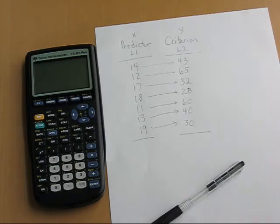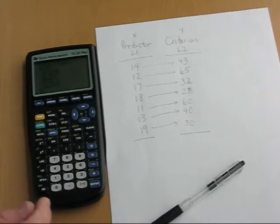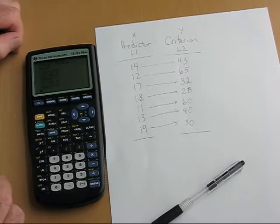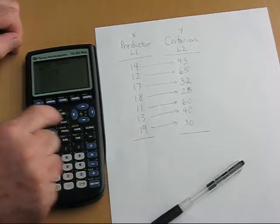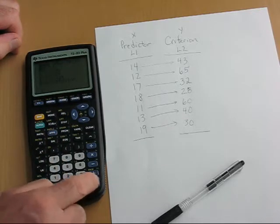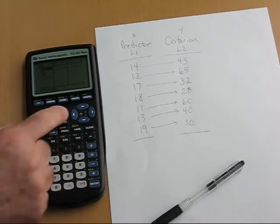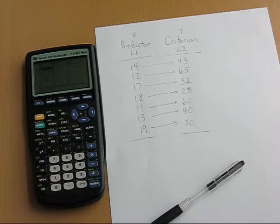Let's turn on the calculator and enter the data into list 1 and list 2. What I see here when I turn it on is left over from the other day, so I just go into stats and edit and I see I've got data here so I need to eliminate this data. Since there's only a few I'll just hit the delete key three times and they're gone.